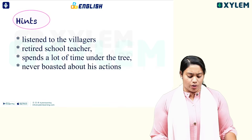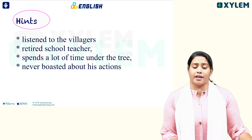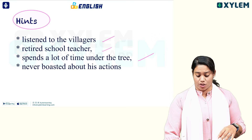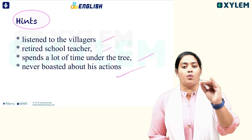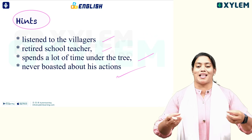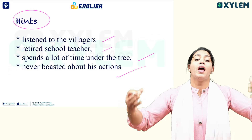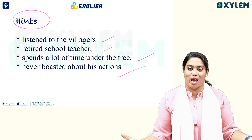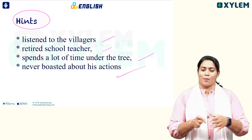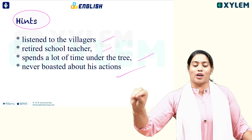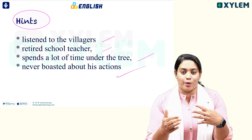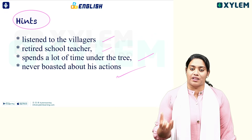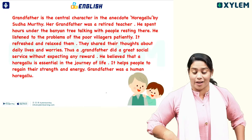This question might come in the exam. The key points are: he always had interest in listening to others, he was a retired school teacher, he spent a lot of time under the tree, and he never boasted about his actions. He was not self-boastful. These are the important points to cover.